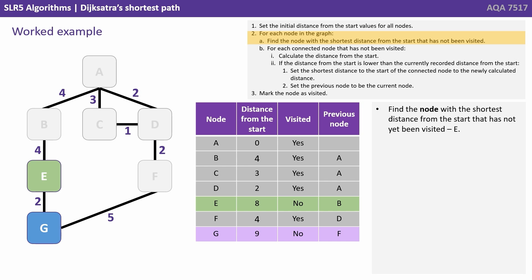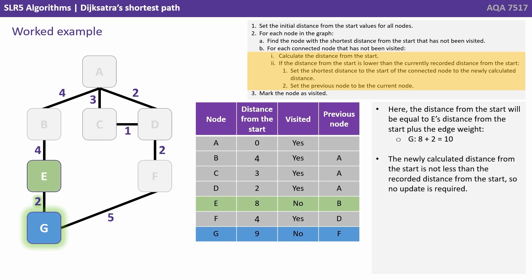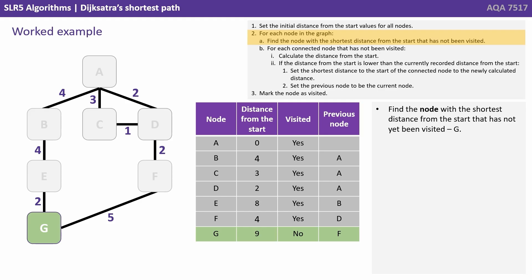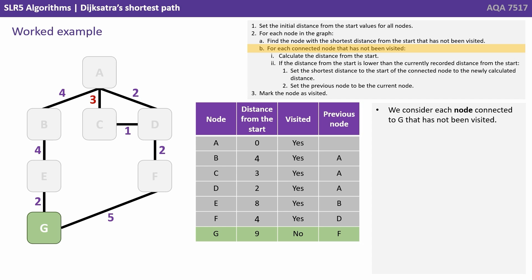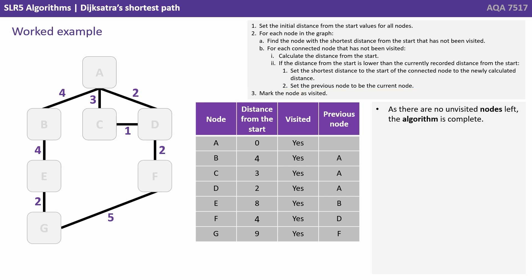We find node E with a distance of 8. We consider each node connected to E that's not been visited — that's G. The distance equals E's distance plus the edge weight: 8 plus 2 is 10. Since 10 is not less than the current recorded distance of 9, no update is required. We mark E as visited. Finally, only G is left; it has no connected unvisited nodes, so we mark it as visited. As there are no unvisited nodes left, the algorithm is complete.